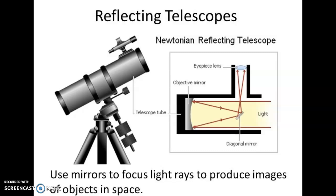Next are reflecting telescopes. Reflecting — as the name suggests, like a mirror — reflecting telescopes use mirrors to focus light rays to produce images of objects in space.